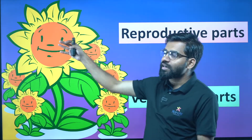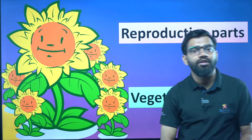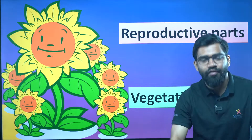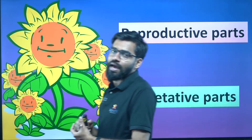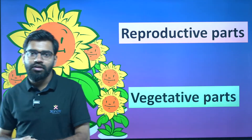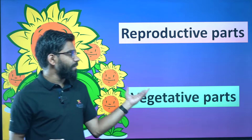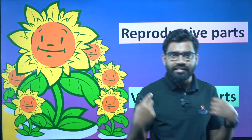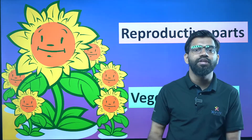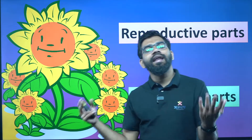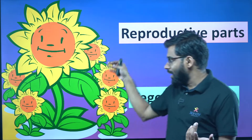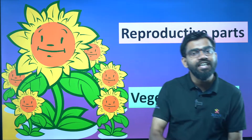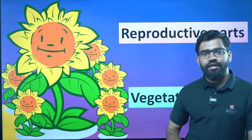The plants have a reproductive part. That is the flower. The flower is the reproductive part. That is not the leaf, stem, root, and other flowers — we call those the vegetative parts.